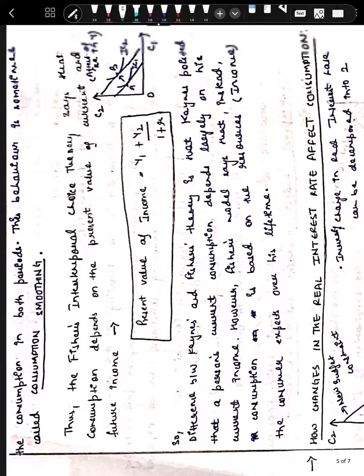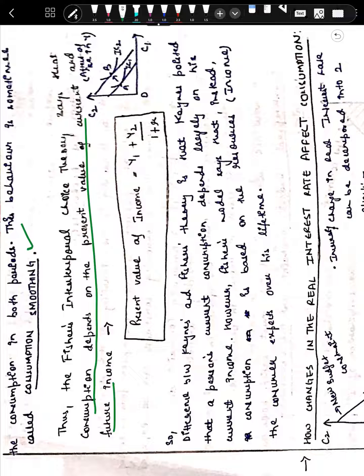Regardless of whether the increase in income occurs in the first or second period, the consumer spreads consumption across both time periods — this is called consumption smoothing. This is an important concept that often appears in short notes and MCQs: consumption smoothing means spreading income across both time periods for consumption. Fisher's intertemporal choice theory says that consumption depends on the present value of current as well as future income, which is Y1 plus Y2 divided by (1 + r), where r is the interest rate.